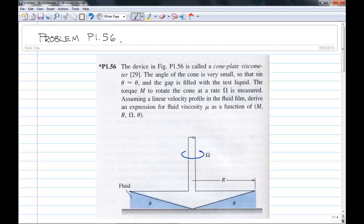It deals with a cone-plate viscometer, and you can see by the asterisk that it's considered a difficult problem. It considers a device whereby you rotate this cone, and by measuring the total moment or torque M required to drive the cone, you can determine the viscosity of the fluid that's trapped below the cone and a fixed surface.